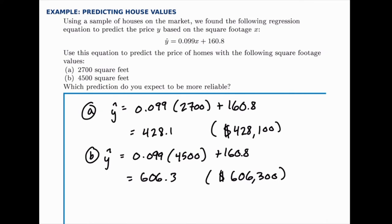And 4,500 square feet does not. None of the houses we have in our data set are nearly as big as 4,500 square feet. So it turns out that the first one is more likely to be reliable. It seems more likely that the first prediction would be more reliable because we've seen houses that are similar to it in our data set.